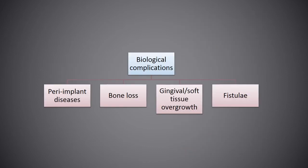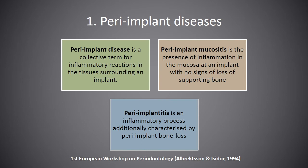The first category is biological complications. These include peri-implant diseases, bone loss, gingival and soft tissue overgrowth, and fistulae. Peri-implant disease is a collective term for inflammatory reactions in the tissues surrounding an implant. Peri-implant mucositis is the presence of inflammation in the mucosa around an implant with no signs of loss of supporting bone. Peri-implantitis is an inflammatory process additionally characterised by peri-implant bone loss.